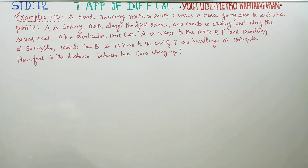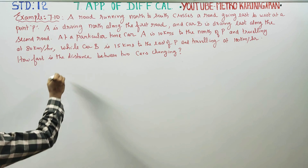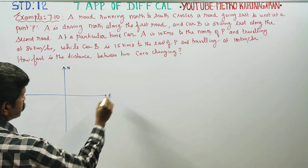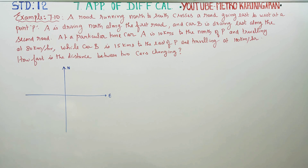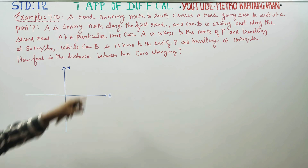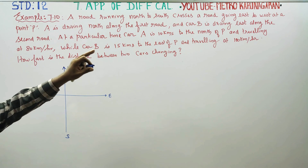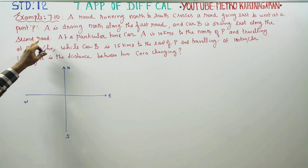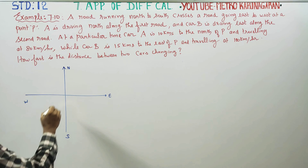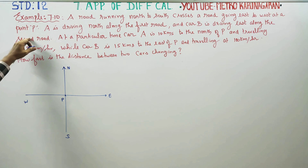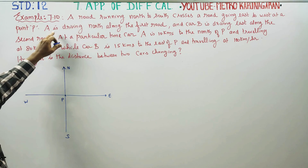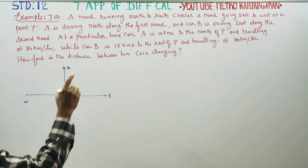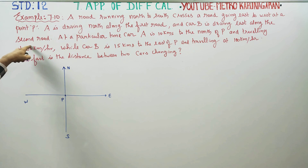A road is running north to south. A road running north to south crosses a road going east to west. Their intersection is a point P. Car A is driving north along the first road and car B is driving east along the second road.